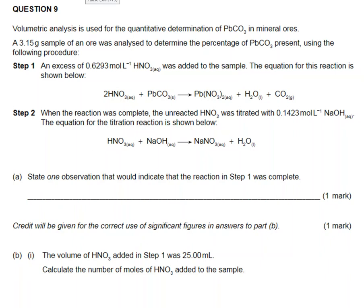Looking at this question, we have lead carbonate in a particular ore - a 3.15 gram sample. In step one, we're reacting it with excess nitric acid, and you can see through this reaction that the nitric acid dissolves the insoluble lead carbonate.